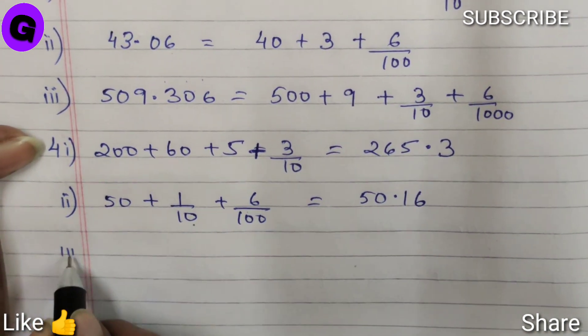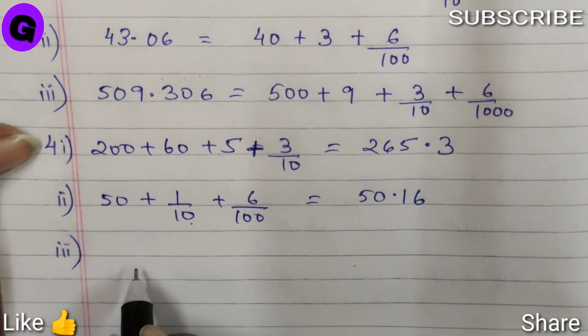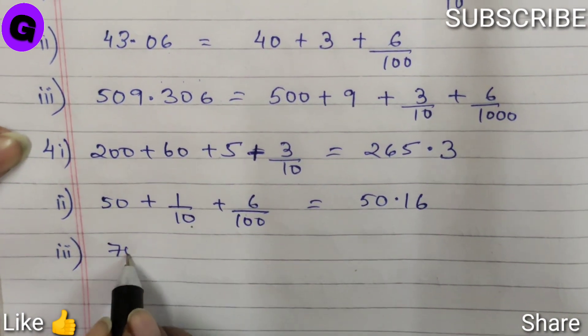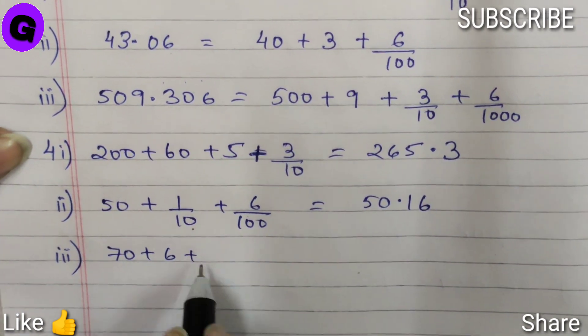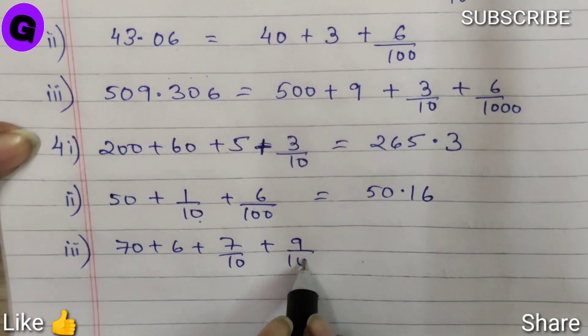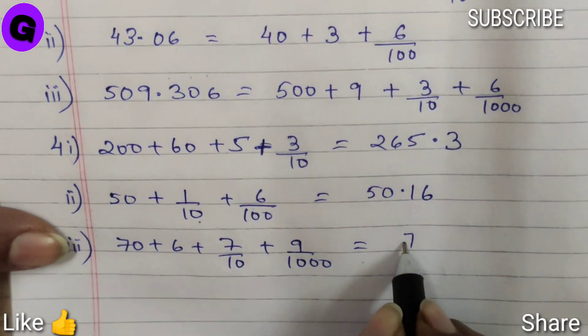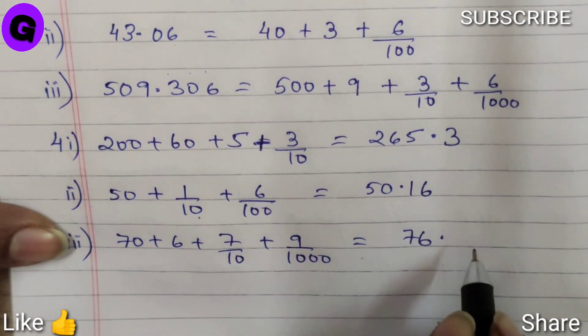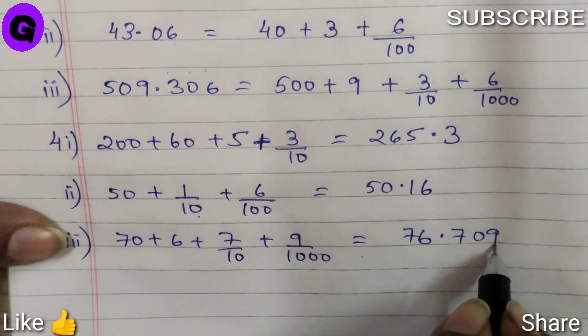Number 3, 70 plus 6 plus 7 by 10 plus 9 by 1000 will give us 76.709.